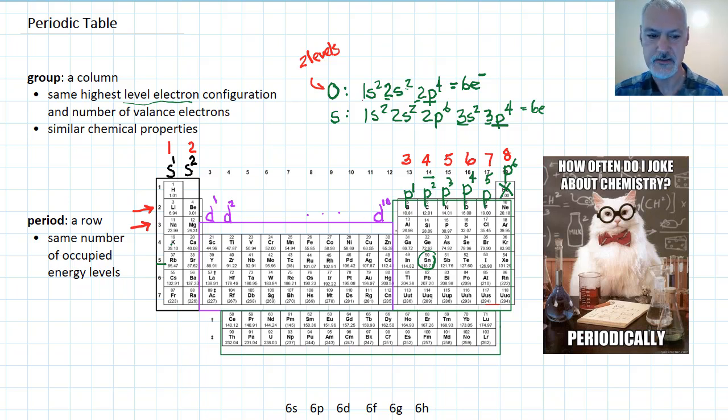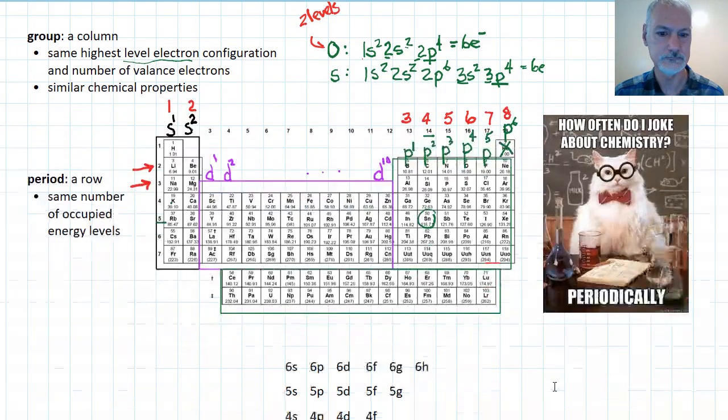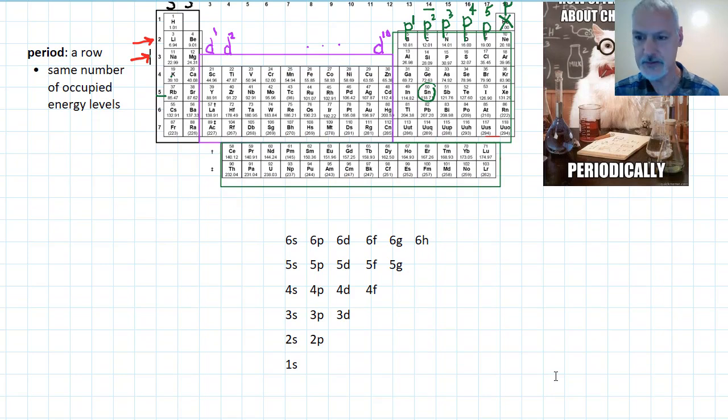Let's use these features now to come up with the electron configuration of a couple of elements. I'm going to return back to my element, tin, for a moment. So we know tin, from up above, it's in group 14 and in period number 5.